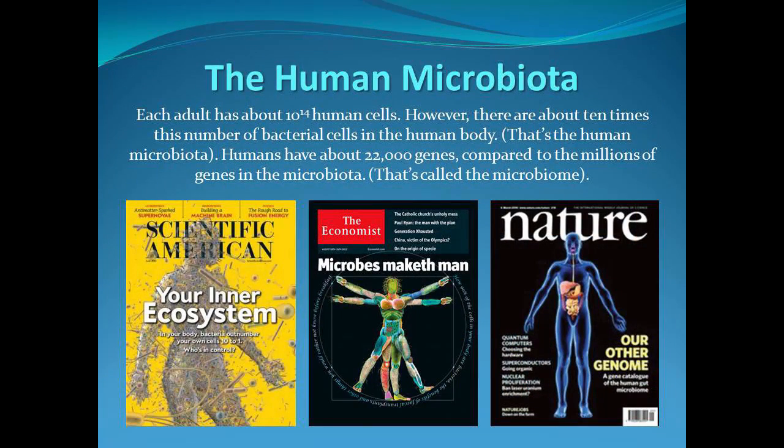Every adult has 10 to the 14 cells - that's a one followed by 14 zeros - but we have 10 to the 15 bacterial cells living in us and on us, which is 10 times the number of cells. Humans have about 22,000 genes, but there are actually hundreds of times that many genes in the microbiota.